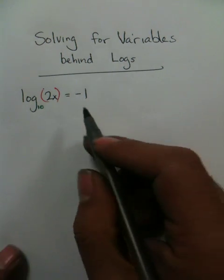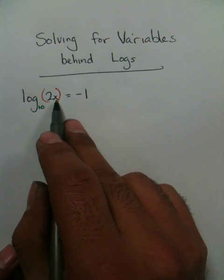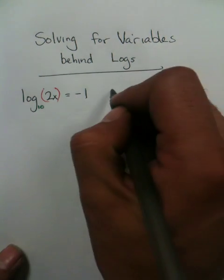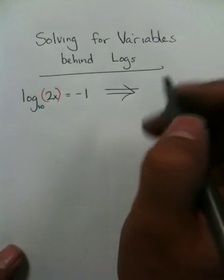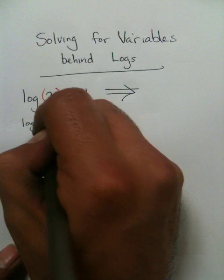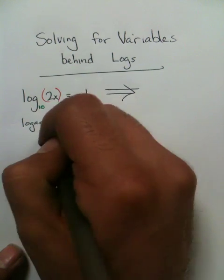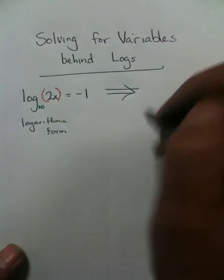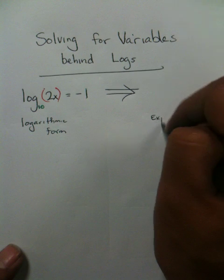If you really want to get x by itself, you have to convert this. What you're doing is you're changing it from logarithmic form to what's called exponential form.